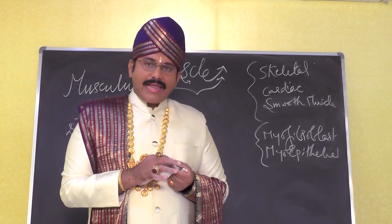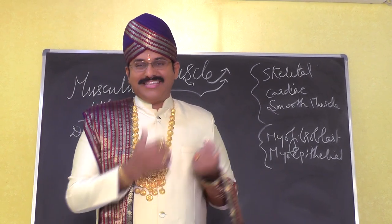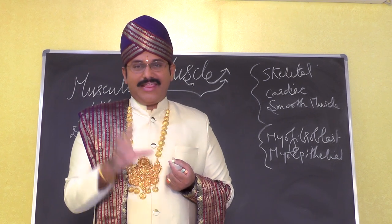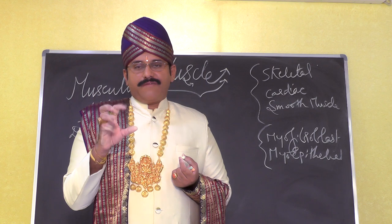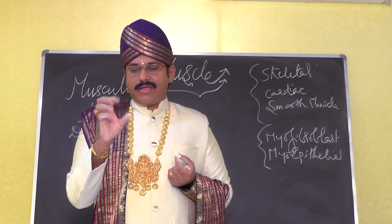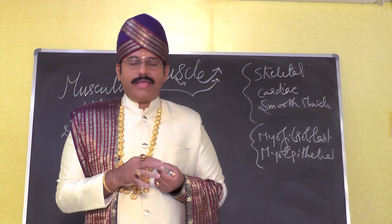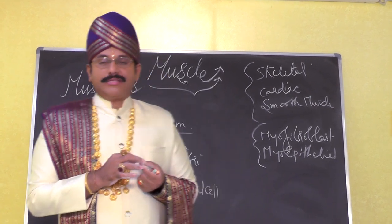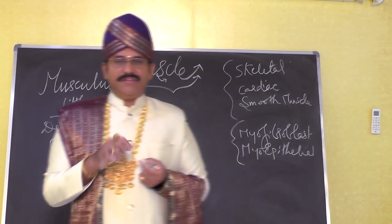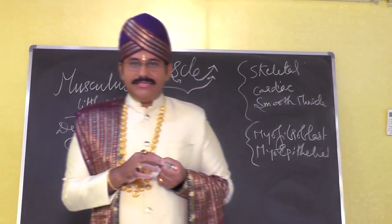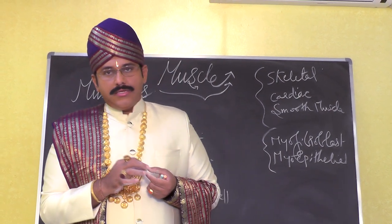Cardiac muscle is present exclusively in the heart. Its special feature is rhythmic contraction. A unique structural feature of cardiac muscle is the presence of intercalated discs (also called intercalary discs), which are found only in cardiac muscle tissue.